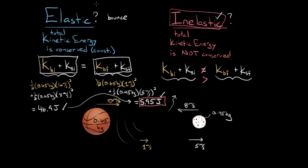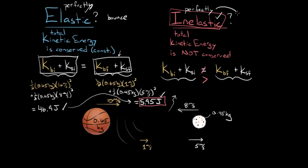Recapping: for a collision to be elastic, it's not enough to just know it bounces. You have to check if the total initial kinetic energy is the same as the total final kinetic energy. If that's the case, it's elastic; if not, it's inelastic. Sometimes you'll hear 'perfectly elastic collision' — that's redundant, it just means elastic. But 'perfectly inelastic collision' is meaningful: it means the two objects stick together and move off as a single unit.